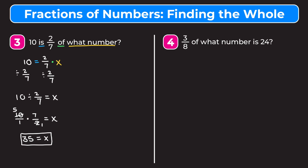Moving on to our last example — I encourage you to pause the video and try it on your own, then watch me work through it to check your answer. We have: three eighths of what number is 24. Let's set up an equation. Three eighths, and 'of' means multiplication, so three eighths times what number — that's x. 'Is' always means equals, and 24 is a number so we keep it as is. So we have three eighths times x equals 24. To get rid of the three eighths, since it's being multiplied by x, we divide both sides by three eighths. On the right we have 24 divided by three eighths.